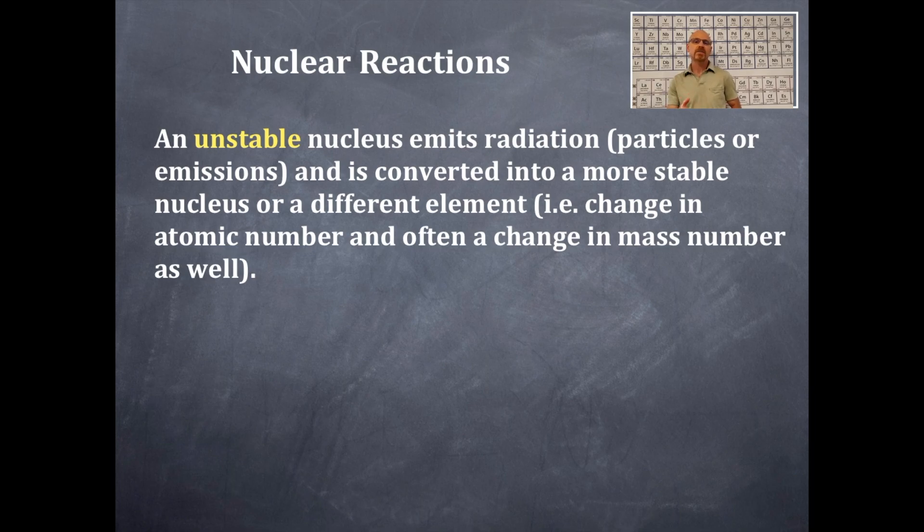An unstable nucleus emits radiation. That radiation can be in the form of either particles or emissions energy and it is converted into a more stable nucleus or potentially a different element as a process that occurs.